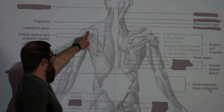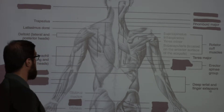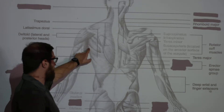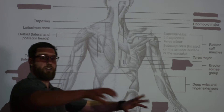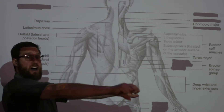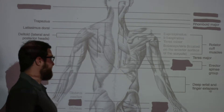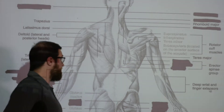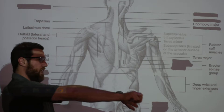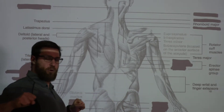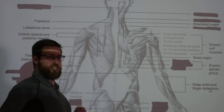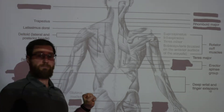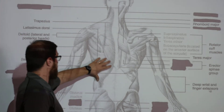We see the deltoid again — we talked about that on the anterior side, so I won't describe it further. Then we have your major back retractor and arm flexor for posterior adduction: this is your latissimus dorsi. It's that big V-shape you see on bodybuilders. It's really involved in posterior adduction, retraction, and if you're doing a pull-up or pull-down motion, that is your latissimus dorsi doing the work — a very wide, large, and fairly superficial muscle.